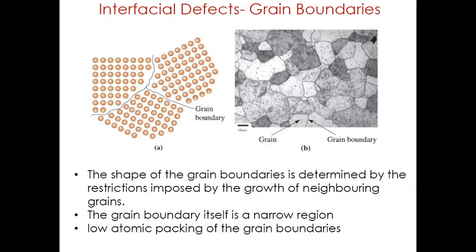Grain boundaries are surface imperfections in polycrystalline materials that separate grains of different orientation. In metals, grain boundaries are created during solidification when crystals form from different nuclei and grow simultaneously until they meet each other. From an atomic perspective, the shape of the grain boundary is determined by the restriction imposed by the growth of neighboring grains. The grain boundary itself is a narrow region between two grains of about 2 to 5 atomic diameters in width, and is a region of atomic mismatch between two adjacent grains.